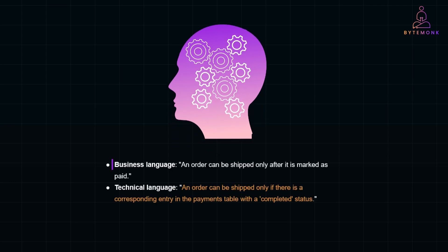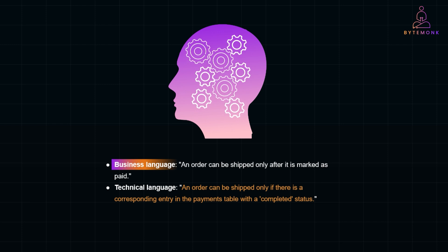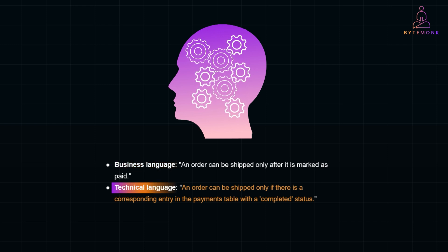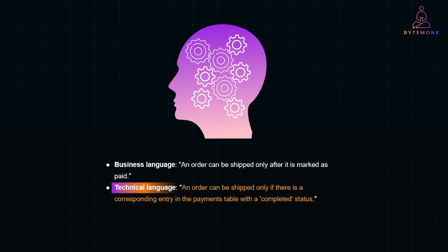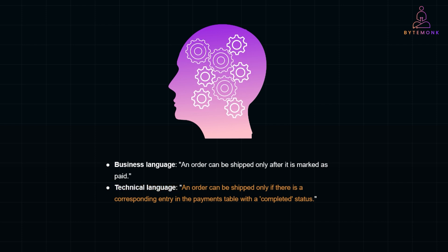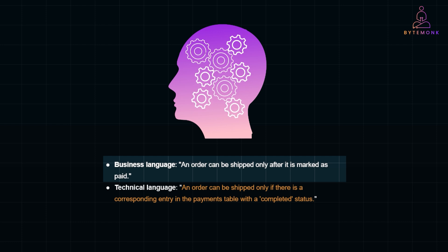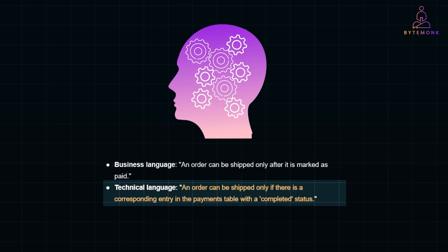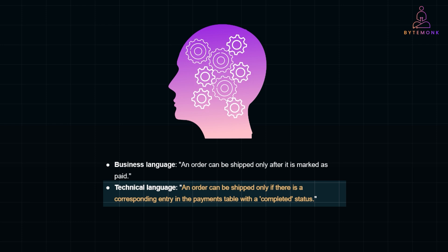For example, in business language: 'an order can be shipped only after it's marked as paid.' Whereas in technical language, it might be phrased as: 'an order can be shipped only if there is a corresponding entry in the payments table with a completed status.' Obviously, the first statement is easy for all stakeholders to understand, while the second is tailored for engineers and may confuse others.